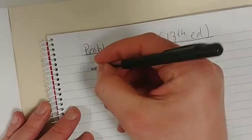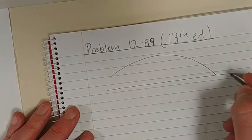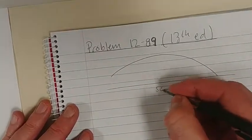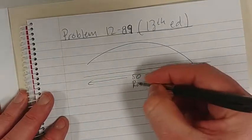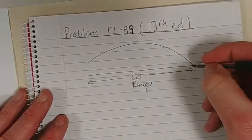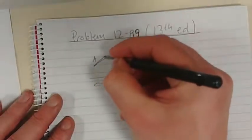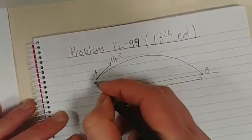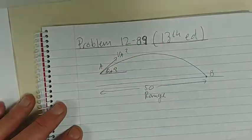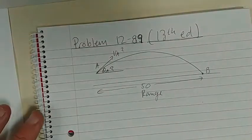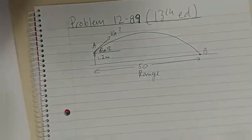Okay, looks something like that. That's 50 meters. From there to there, that's our range. There's B, there's A. Original VA, we don't know. Original angle, we don't know. And that height there is 1.2. So what is our general approach?